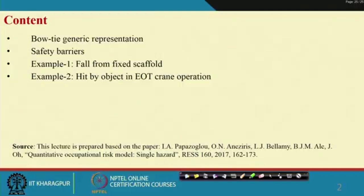Particularly the safety barrier and the fall from fixed scaffold - these two I have taken from a paper written by Papajoglu, Bellamy, and others. The title of the paper is 'Qualitative Occupational Risk Model Single Hazard,' published in Reliability and System Safety. The other example I have created for you.